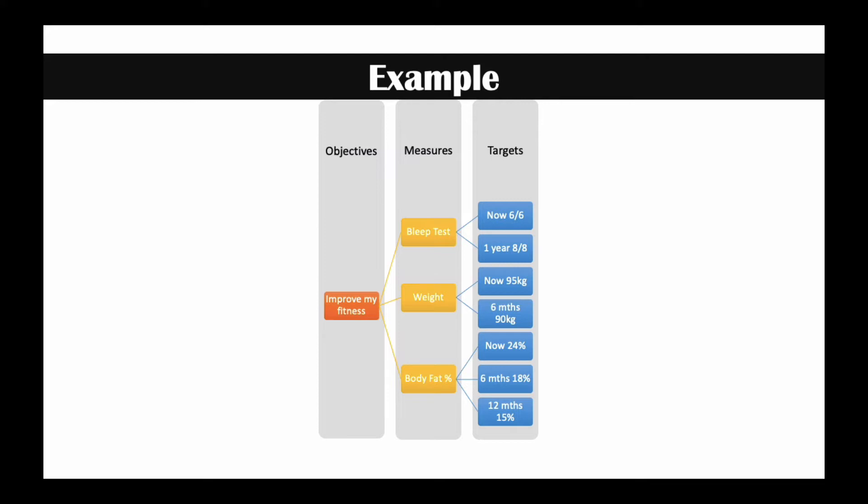Then we have some targets. The bleep test is currently 6.6, and in a year I'd like to be 8 out of 8. I currently weigh 95 kilos; in six months' time I'd love that to be 90 kilos. I'm now 24% body fat, and in six months' time I'd like that to be 18%; in 12 months' time I'd like that to be 15% — I don't know if that's achievable or not. That's how you layer them up.